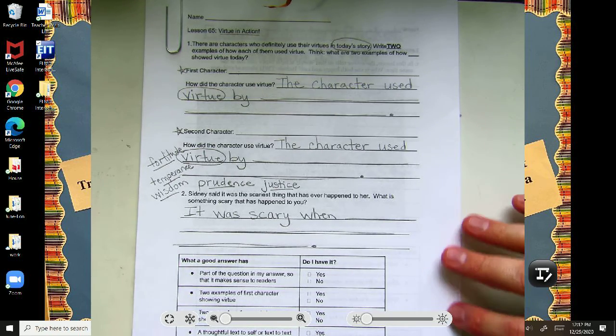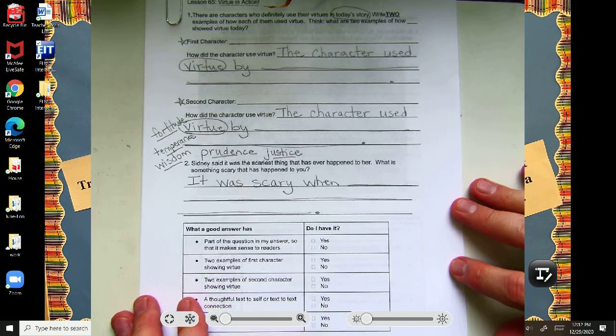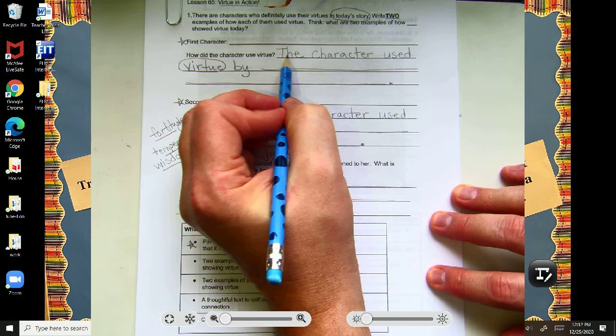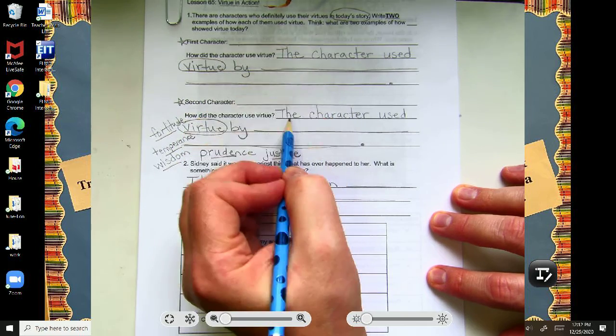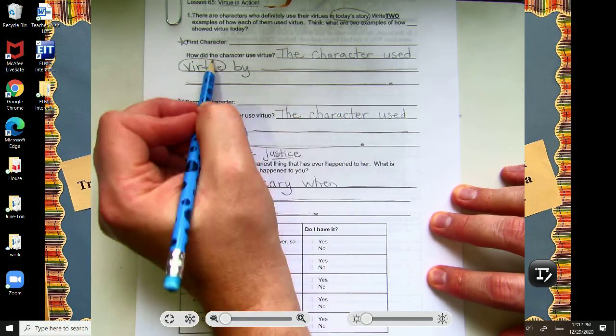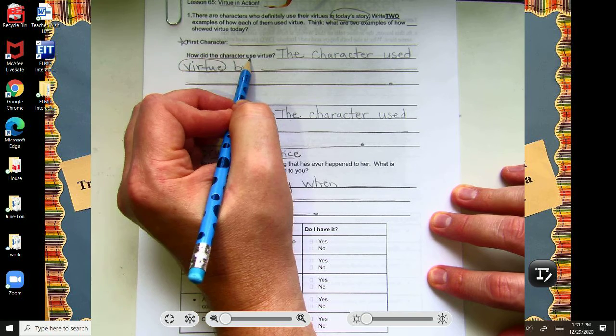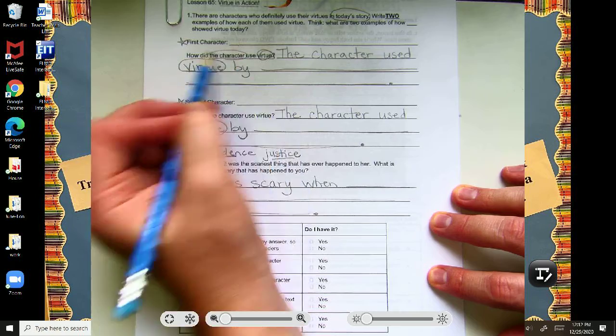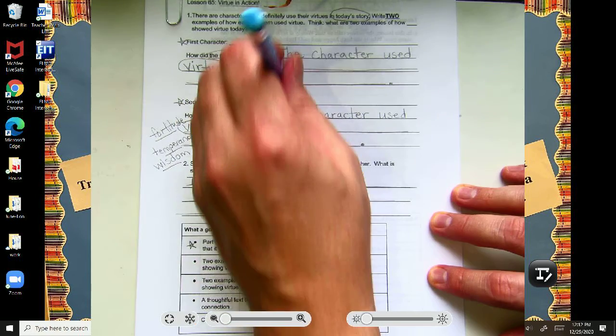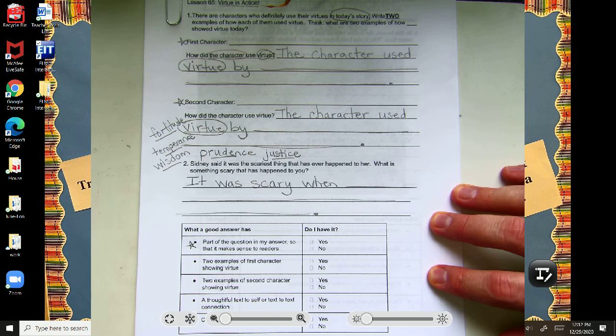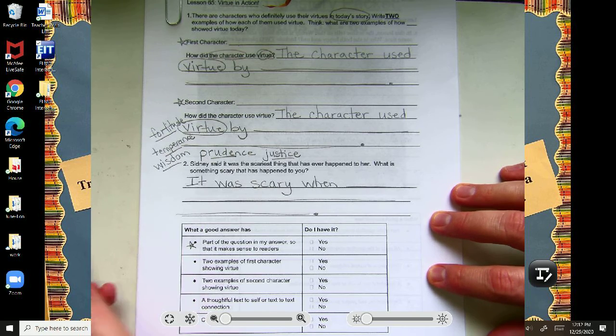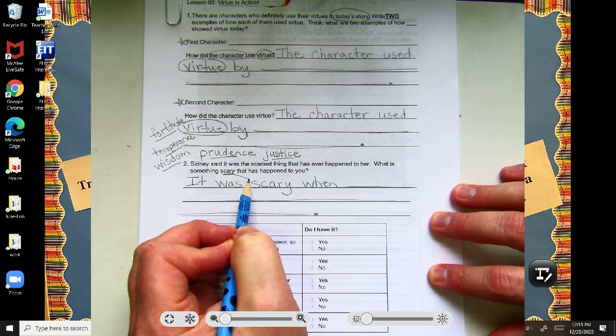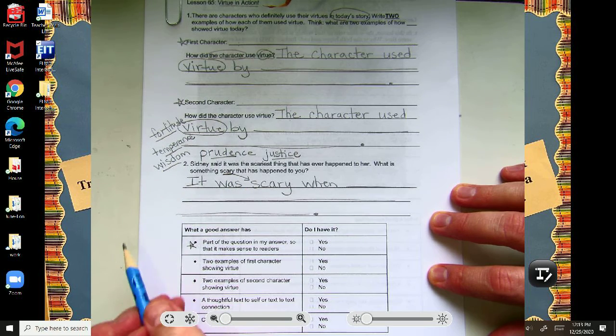So looking at our rubric, scholars, part of the question is in my answer. So that's this part, right? How did the character use virtue? So if you start out with like, the character used virtue, or the specific virtue, or even the actual name of the character, that would be okay. Those are going to be ways of using the words of the question in your answer. Same thing with this one, right? Scary. So what is something scary that happened to you?